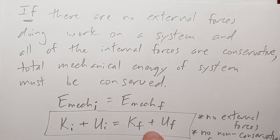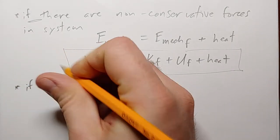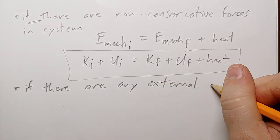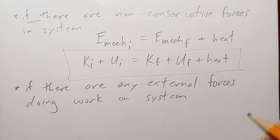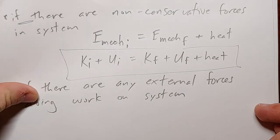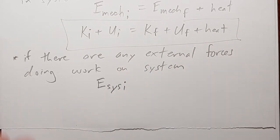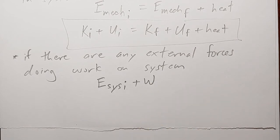The other thing we said originally to get our conservation of mechanical energy equation was that there couldn't be any external forces doing work. So let's think about what would happen if there are external forces doing work. If there are external forces doing work on the system, that means the initial energy of the system is not going to be equal to the final energy of the system. Because we're going to do some work on it, so we have to add the amount of work done. If it's positive work, we're going to increase the energy of the system; if work is negative, we're going to decrease the energy.